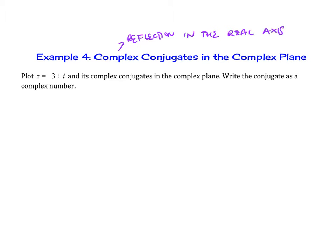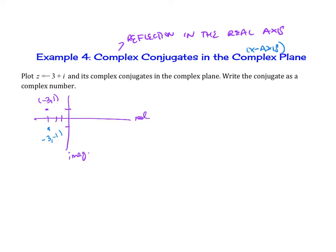Remember, we're calling our real axis our x-axis. So let's try this. We're going to plot z equals negative 3 plus i. This is our real axis and this is our imaginary axis. So left 3, up 1, and so this is negative 3, 1. The reflection across is going to be here at negative 3, negative 1. So therefore, the complex conjugate is negative 3 minus i.